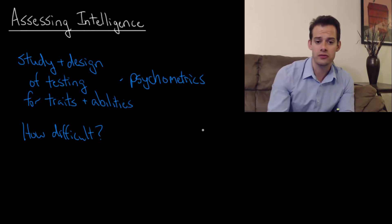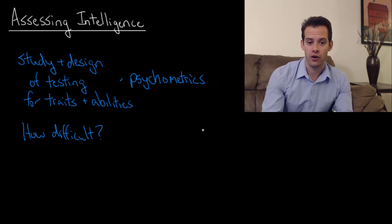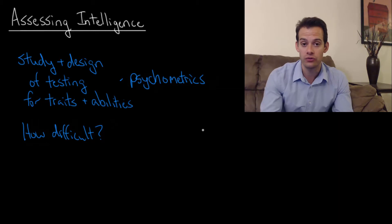And the answer we might come up with is well we want to have a range of difficulties but we want to make sure we have some very difficult questions. If all of the questions on our assessment are relatively easy and most people can correctly answer them then most people are going to end up getting the same IQ score. And that's not really what we want.